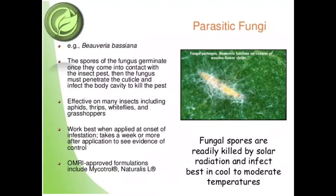The next microbial pesticide is parasitic fungi, for example Beauveria bassiana. Spores of the fungus germinate once they come into contact with the insect pest. The fungus must penetrate the cuticle and infect the body cavity to kill the pest. It is effective on many insects including aphids, thrips, whiteflies and grasshoppers. Parasitic fungi work best when applied at onset of infestation and take a week or more after application to show evidence of control. OMRI-approved formulations include Mycotrol and Naturalite.